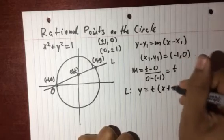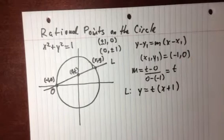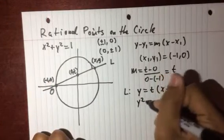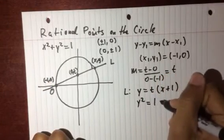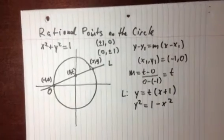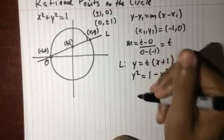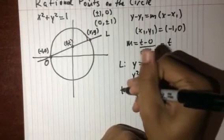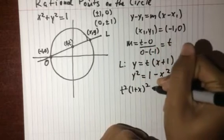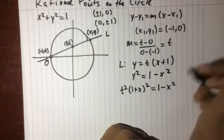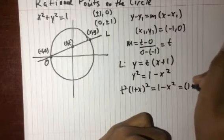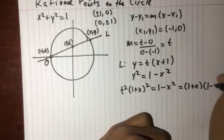And we can rewrite the equation for our circle as y squared equals 1 minus x squared. Now we can solve this using substitution. We can just sub in y and we get t squared times 1 plus x squared equals 1 minus x squared. And we can recognize that this is a difference of squares, so we can write that as 1 plus x times 1 minus x.